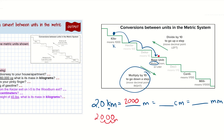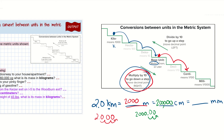Now I need to convert 2,000 meters into centimeters. From the base unit to centi is one, two steps down again. So I move the decimal place two more spots to the right, filling in two more zeros, giving me five total zeros — that's 200,000 centimeters.